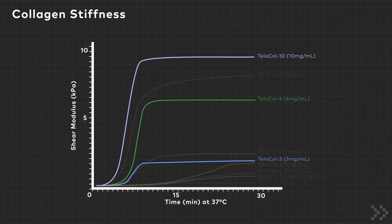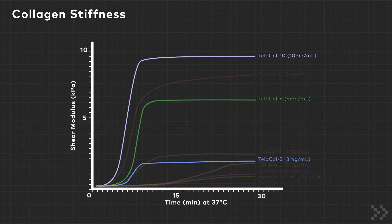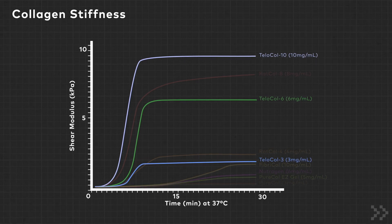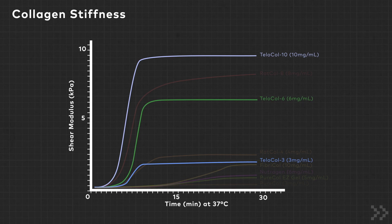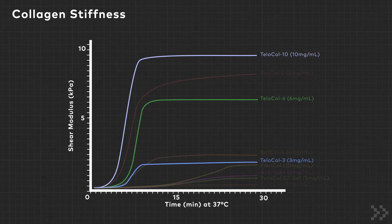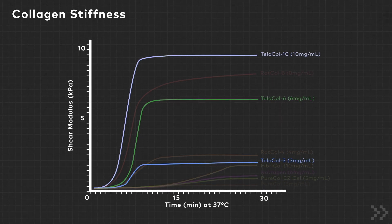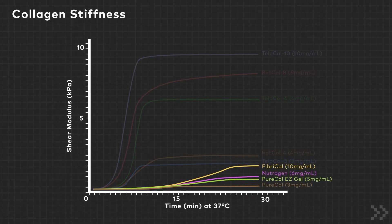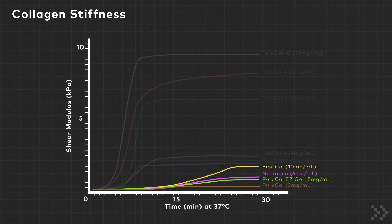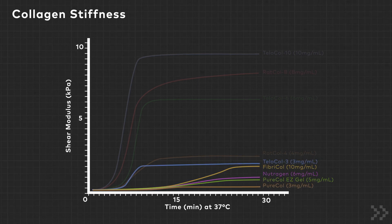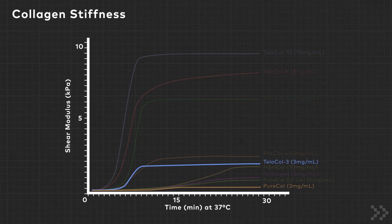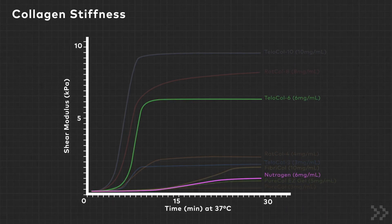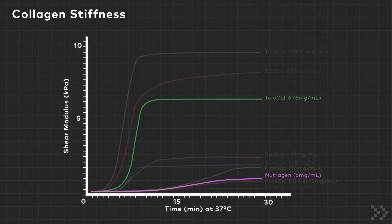Graphing the shear modulus of ABM's collagen products versus incubation time yields information about crosslinking kinetics and hydrogel stiffness. Notice that telocollagen hydrogels will polymerize significantly faster and form stronger hydrogels than their atelocollagen counterparts at similar concentrations. Specifically, note the difference between telocol 3 versus PureCal, both 3 mg per milliliter, and telocol 6 versus Neutrogen, both 6 mg per milliliter.